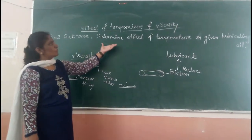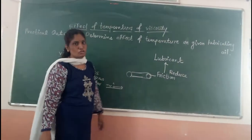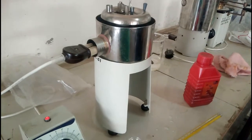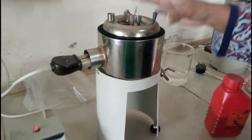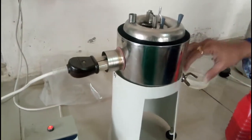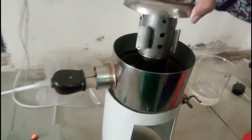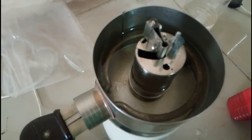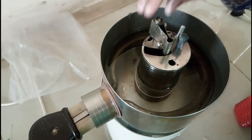Today in this practical, we are studying temperature and how it affects viscosity. The resources required for this experiment: this is the Redwood Viscometer No. 1. You will see the water bath on the inside. It is warm in the coil, and it is warm on the inside — it's ready for the water bath.